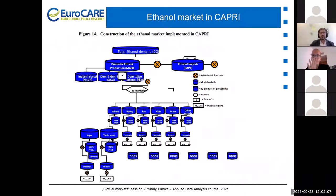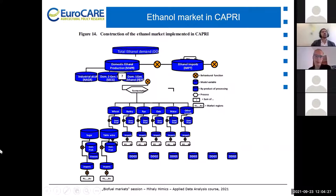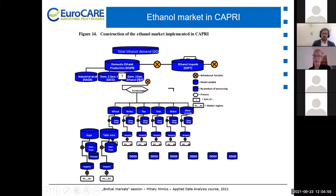Let's come to CAPRI now. I will first go through the basic structure of the ethanol market as represented in CAPRI. You can see all the different raw materials or biofuel feedstocks that can be used for ethanol production — all the cereals like wheat, barley, rye, and so on. There is also ethanol production from sugar and from wine, which is covered by the model. An important point is the byproducts produced in this process, for example DDGS, which is a feedstuff byproduct of ethanol production that can be used for feeding the animal herd.